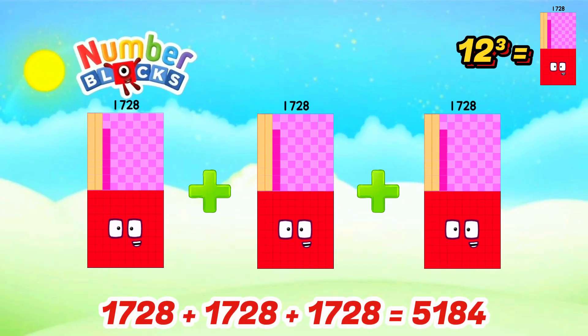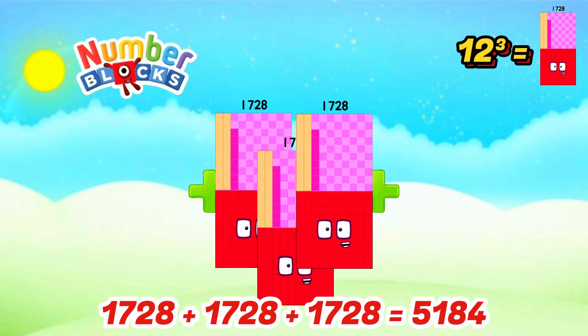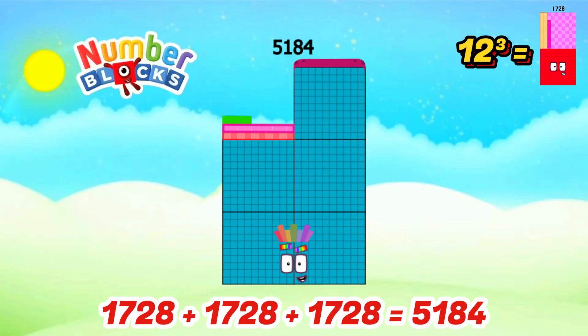Cube of 12 is 1,728. When we add 1,728 three times, the answer is 5,184. Amazing!